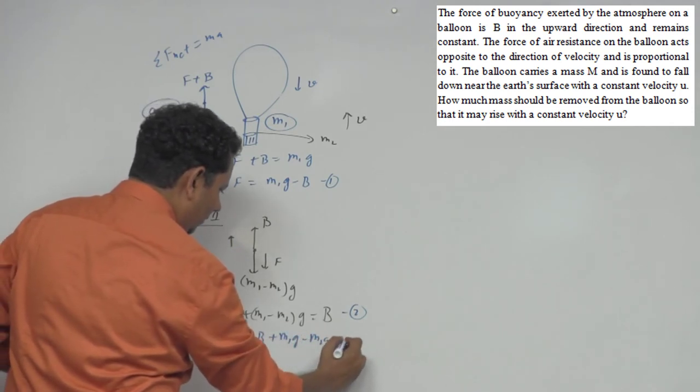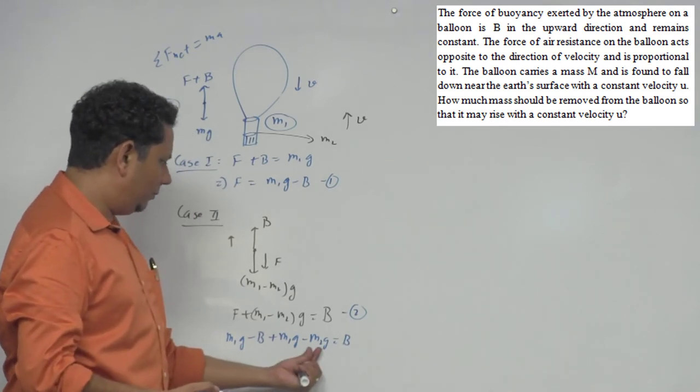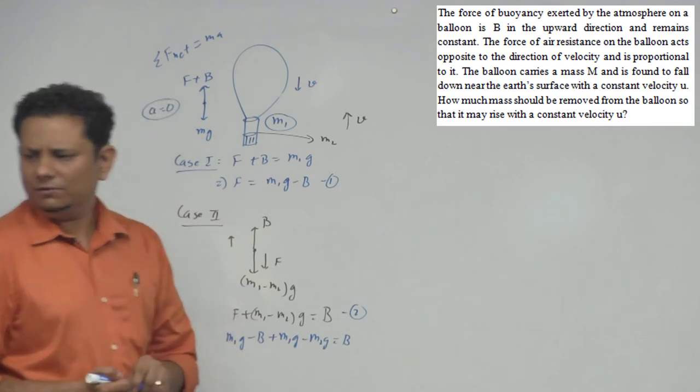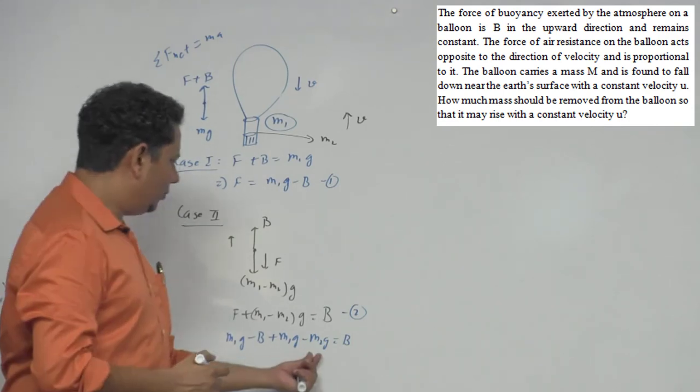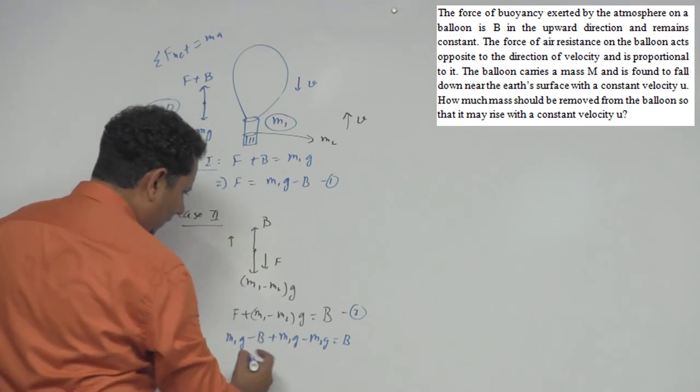And here we only need to find the value of M2. We need to find the value of M2. So in this case we take M2 to this side and everything else to that side.